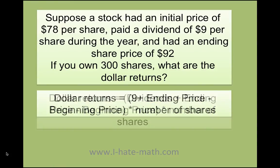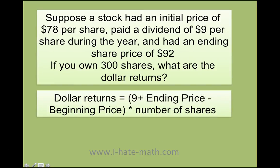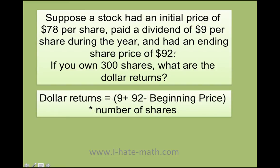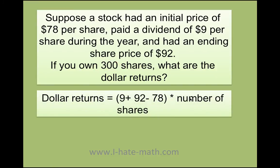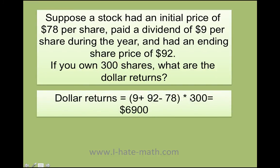So let's do it. The stock paid a dividend of $9, the ending price is $92. So I need to do 9 plus 92 minus 78, which is the beginning price, and finally multiply that by 300, which is the number of shares. The final result is going to be $6,900 — and that's your dollar return.